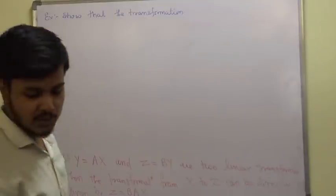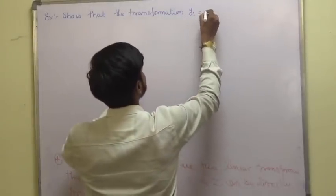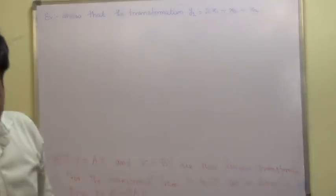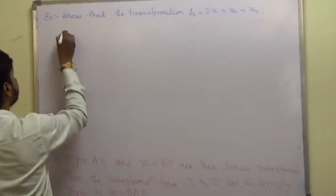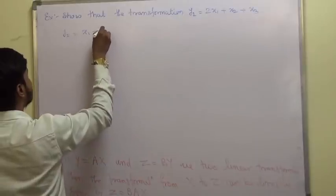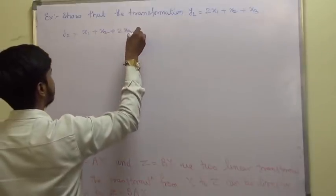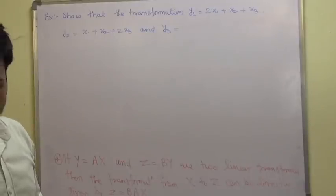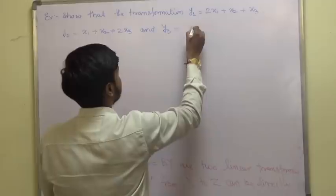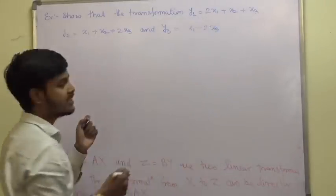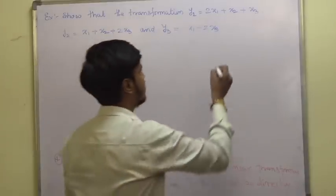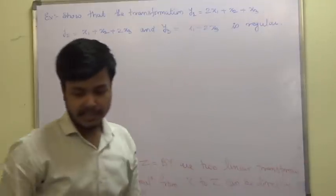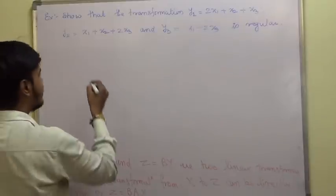The example is: show that the transformation y1 = 2x1 + x2 + x3, y2 = x1 + x2 + 2x3 is regular, and hence find the inverse transformation.